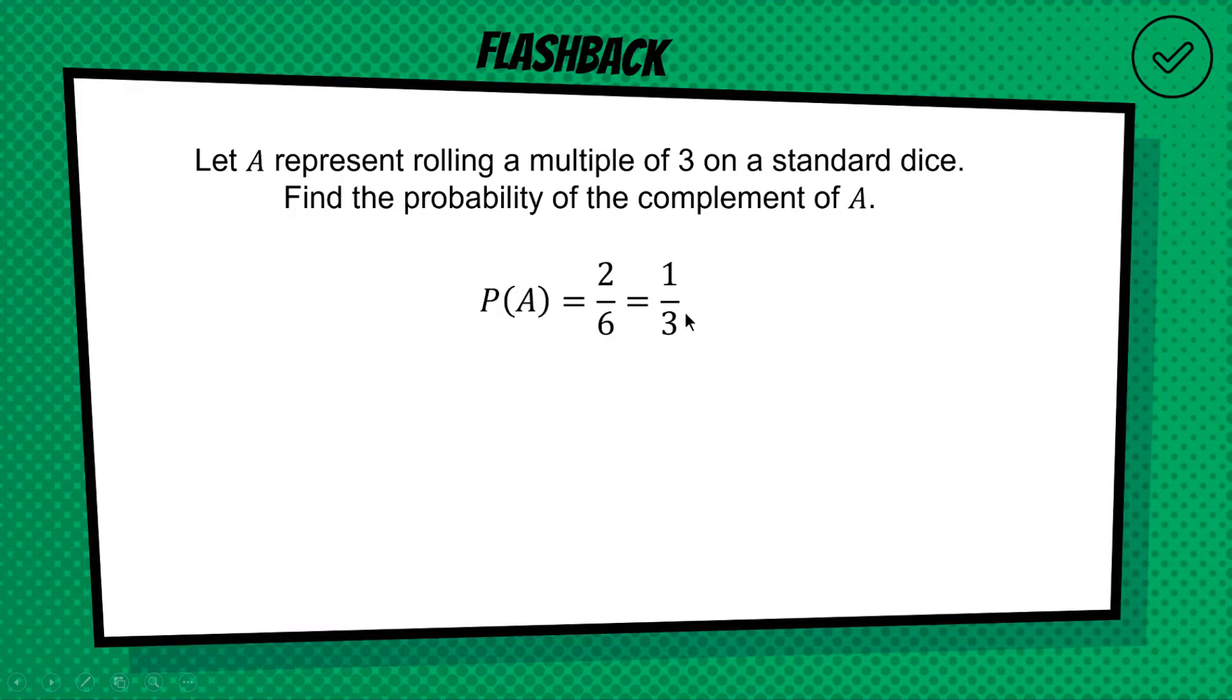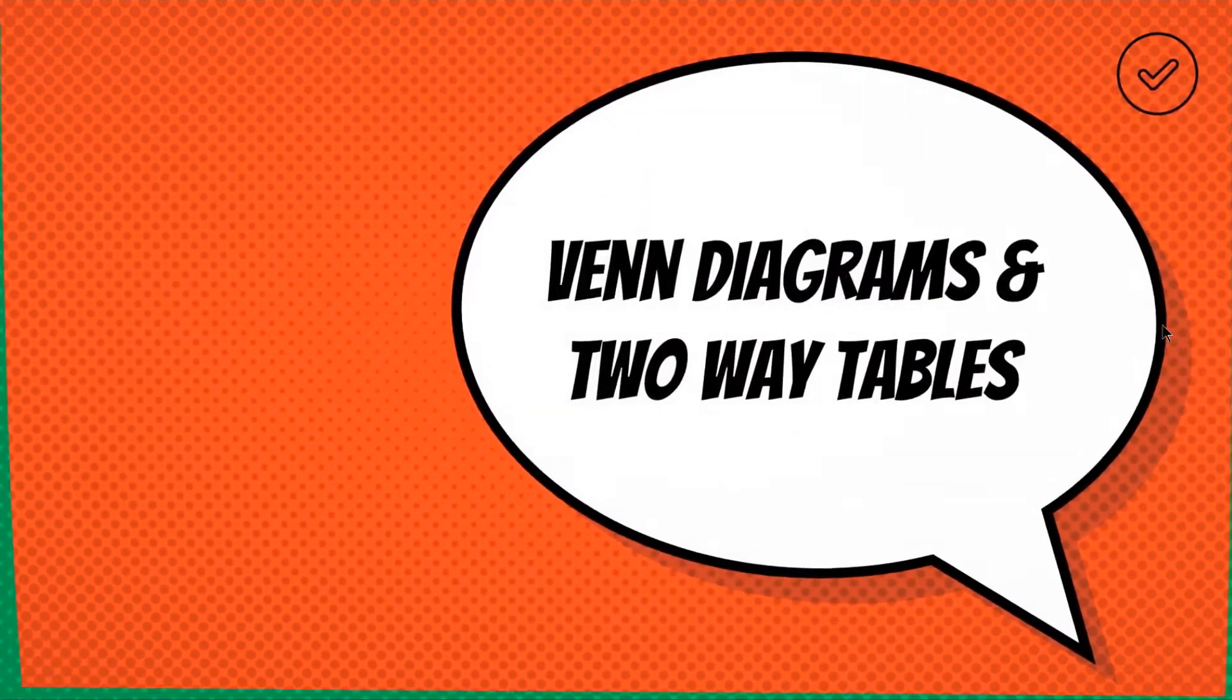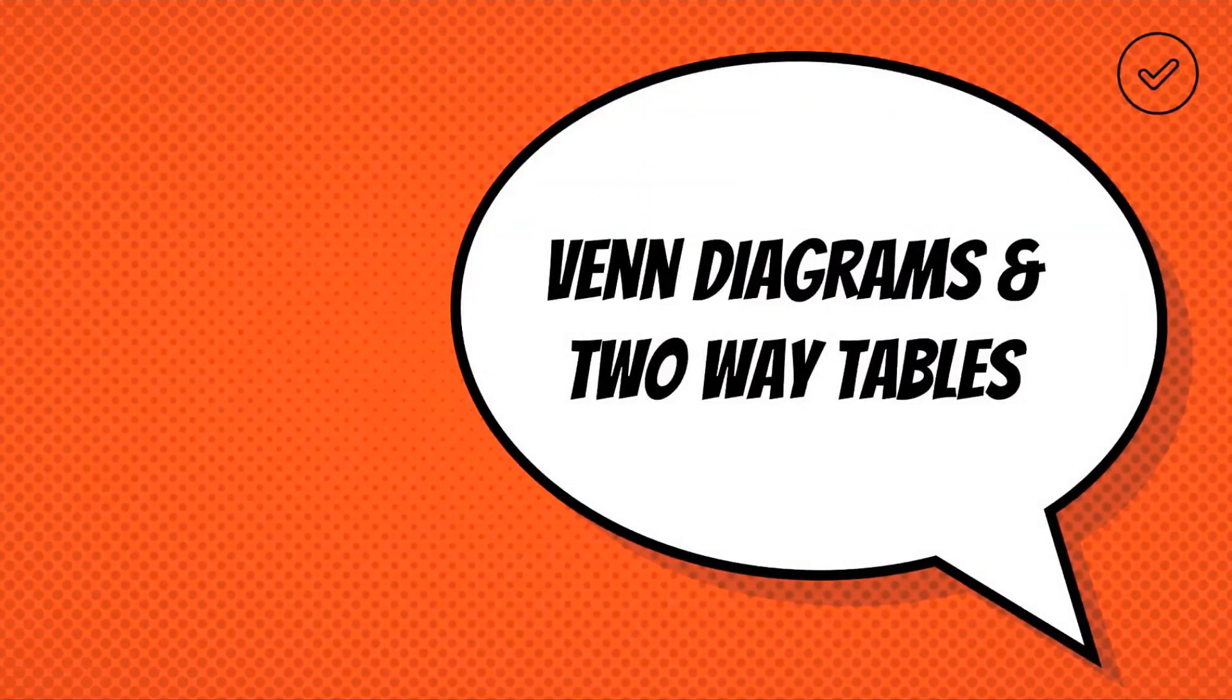So there's a one in third chance that we do roll a multiple of three, so there is a two in three chance that we don't roll a multiple of three. Okay, so for today we are having a look at Venn diagrams and two-way tables. Two very important ways of displaying data in the probability topic.